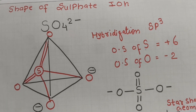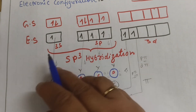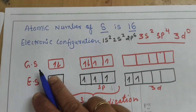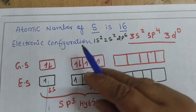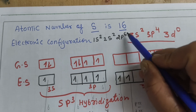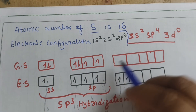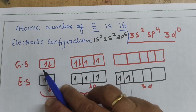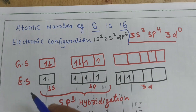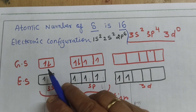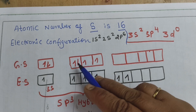Sulfur has atomic number 16, so its electronic configuration is 1s² 2s² 2p⁶ 3s² 3p⁴ 3d⁰. In the ground state, the 3d orbital has no electrons. In the excited state, one electron from 3s and one from 3p jump to the 3d orbital.